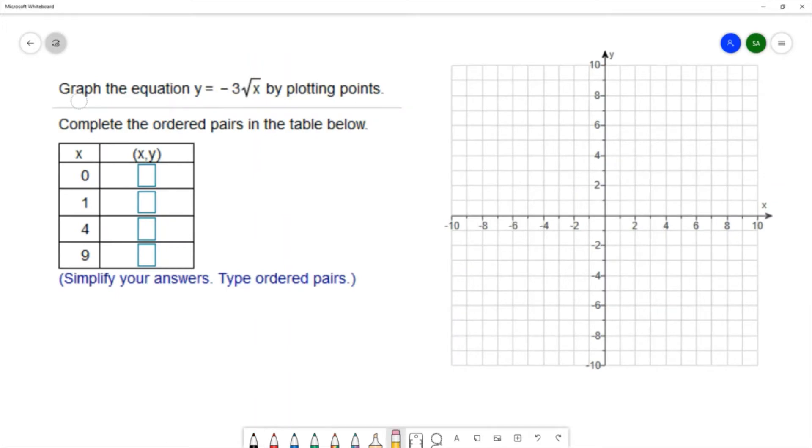For this example, we want to graph the equation y equals negative 3 square root of x by plotting points. We're given a list of x's, and we want to find the ordered pairs associated with those x's. And then we'll sketch the graph on this picture over here.